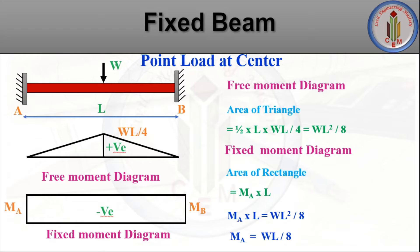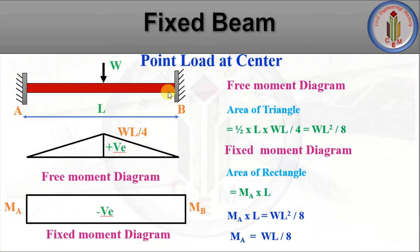Next, let's look into the bending moment diagram. For a fixed beam, we divide the BMD into two parts. First is the free moment diagram — treating the beam as simply supported — which gives a positive bending moment of WL/4. Second is the fixed moment diagram. Since the load acts at the center, the beam is symmetrical, so the fixed moment diagram is a rectangle. The fixed end moments are hogging moments, giving a negative value.